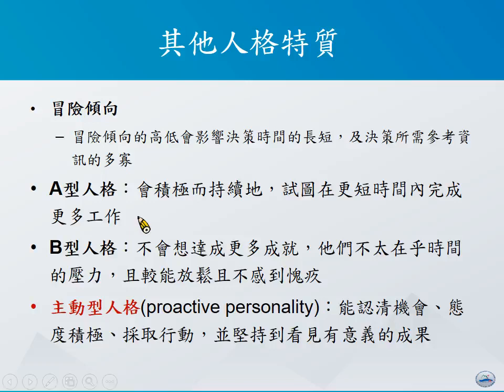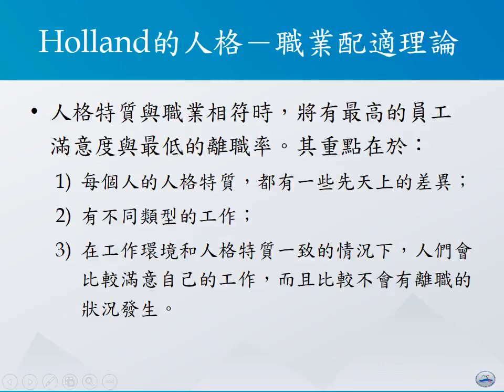最后是主动性与被动性的差异，因此产生了一种叫做主动性人格的状况。主动性人格所泛指的是某些人能够认清机会，通常展现较为积极的态度，采取行动，并且希望坚持地看到有意义的成果发生。像这样的人，基本上是我们组织当中最需要能够找到的人。